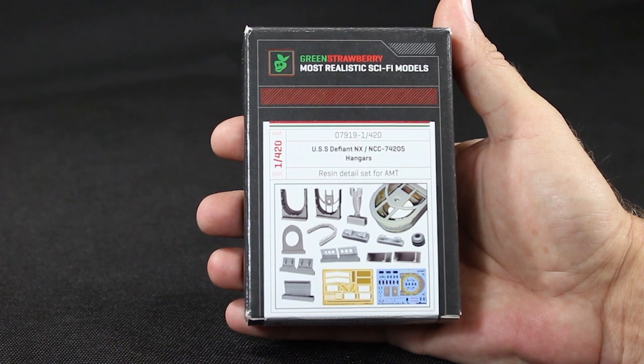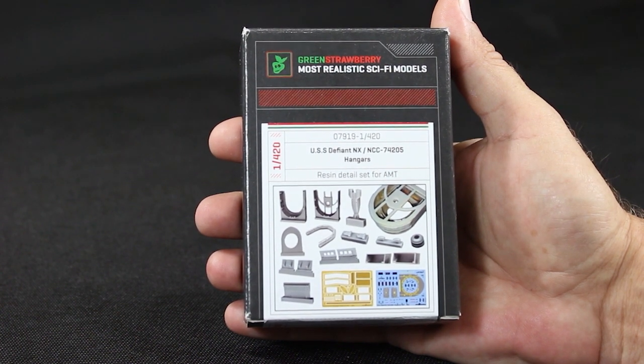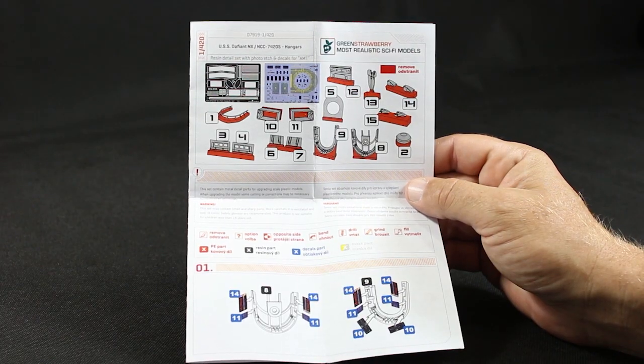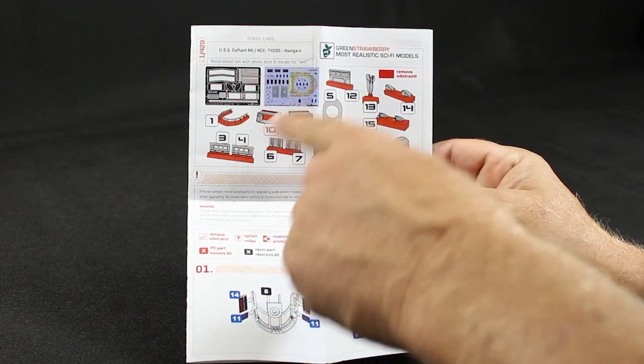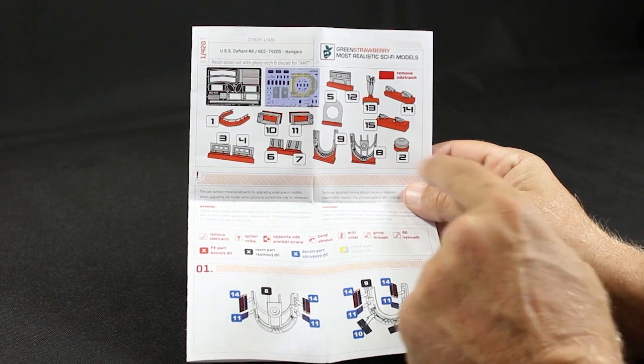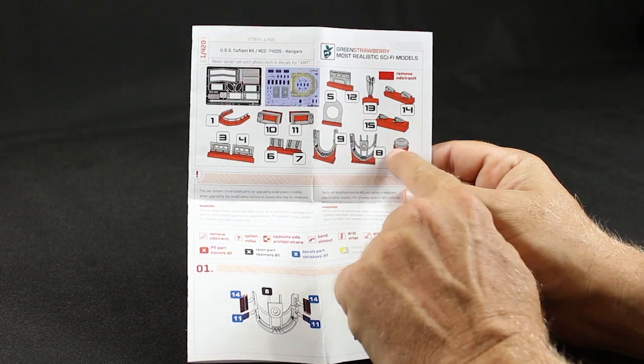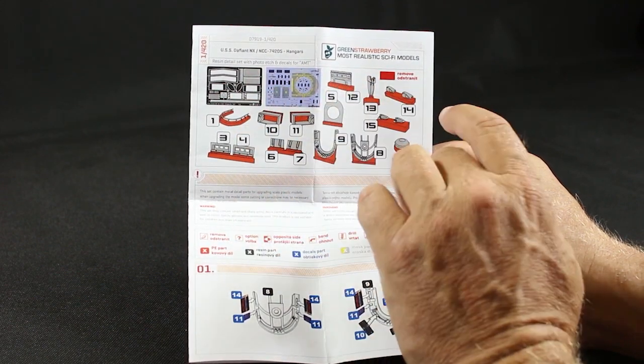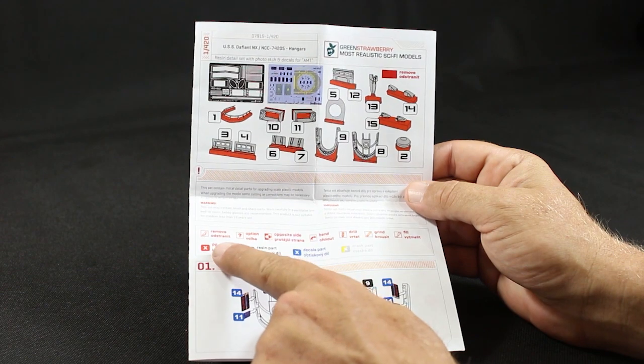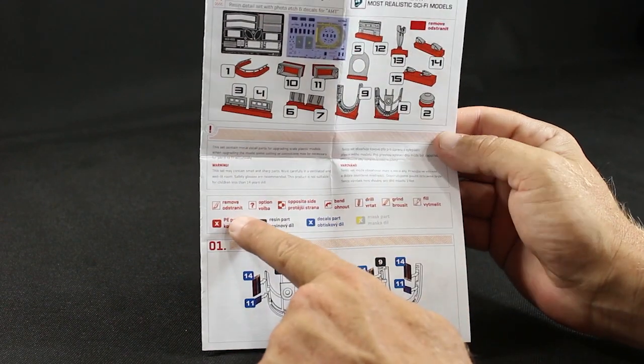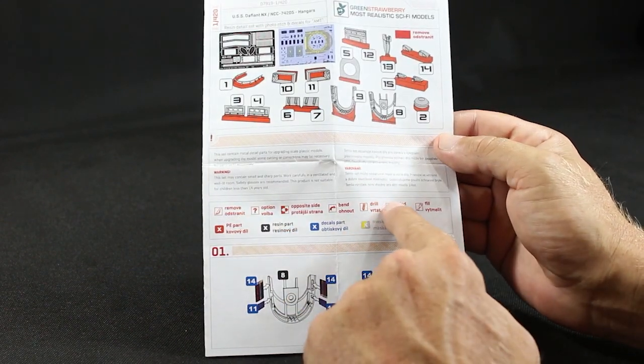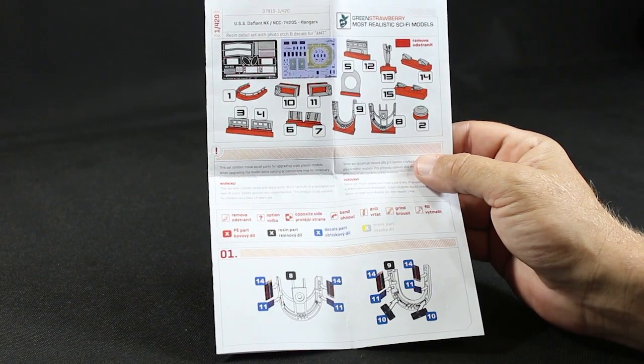So we took a look at what's in the box, now let's jump into the box. We'll start off with the instruction sheet. At the top it tells you the kit number and shows you all the parts in the box. It also shows you where you have to take off the resin, marked in red so you're not making any mistakes. It goes into the key to show you what the callouts are from Green Strawberry and then into the instructions.